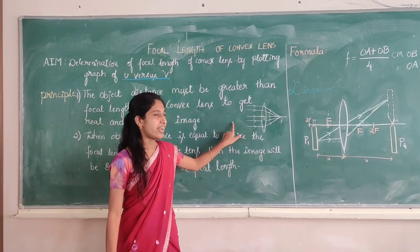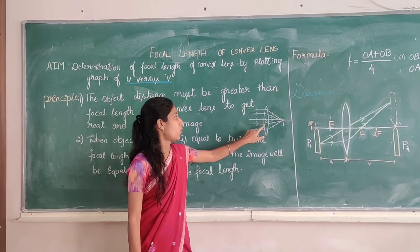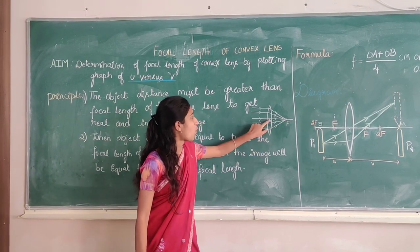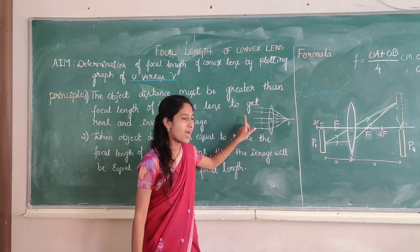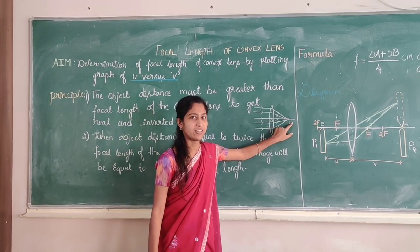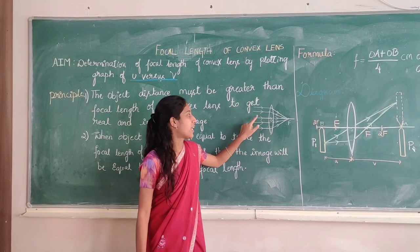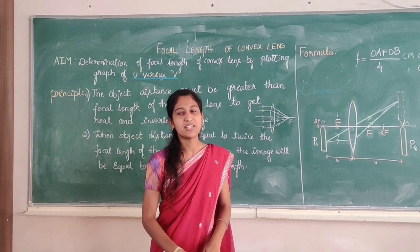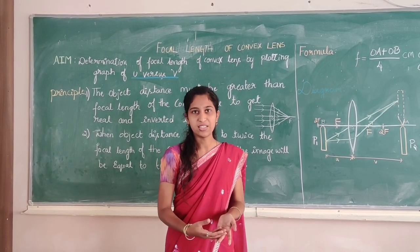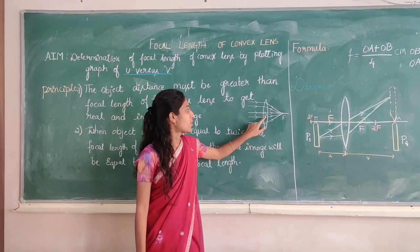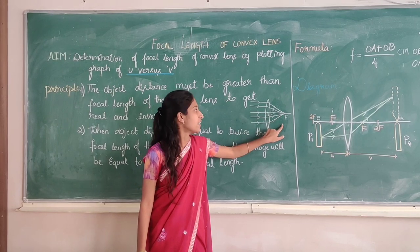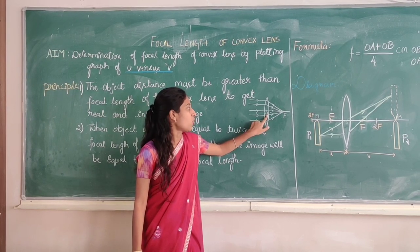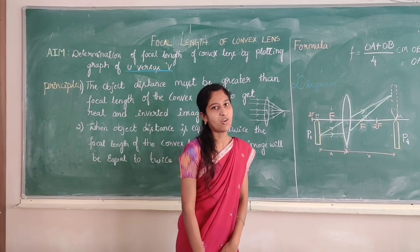As you can see the ray diagram here, we will define optic centre. The optic centre is a point on the principal axis through which the ray passing goes undeviated. Focal length is the distance from the centre of the lens to one of the focal points, known as focal length.